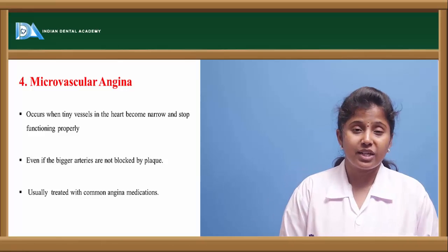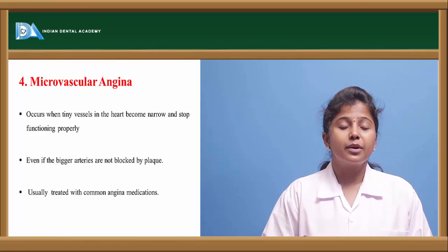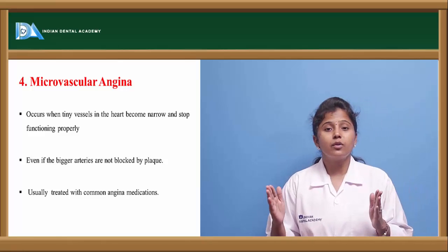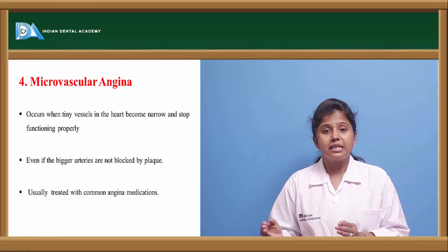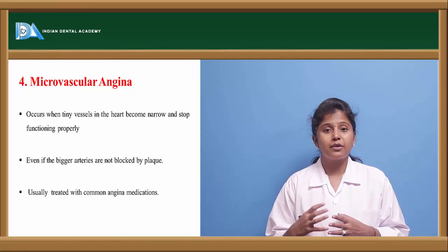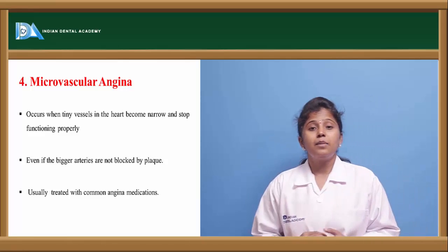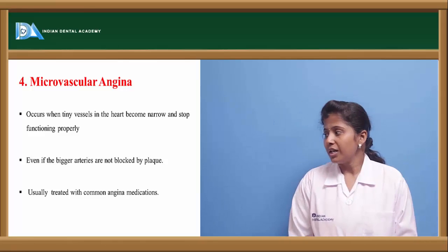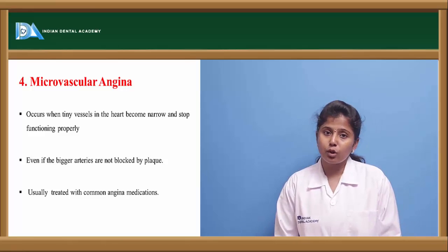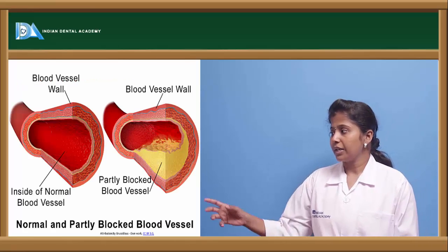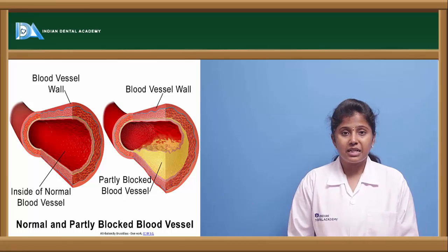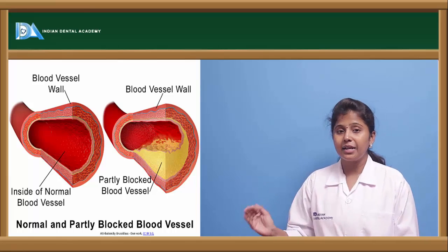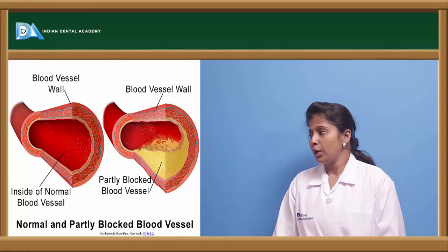Microvascular angina occurs because of the narrowing of micro blood vessels. Unlike other types where major blood vessels are narrowed, here even the major blood vessels may be working properly but the minor blood vessels get narrowed, causing severe chest discomfort. It is treated with common anti-anginal drugs. The blood vessel is not completely blocked but only partially, so blood flow is reduced compared to normal.